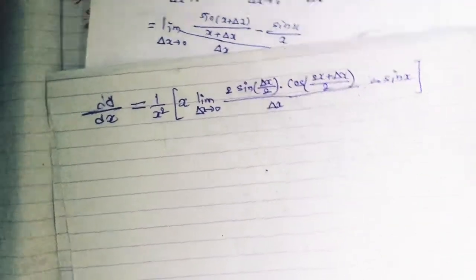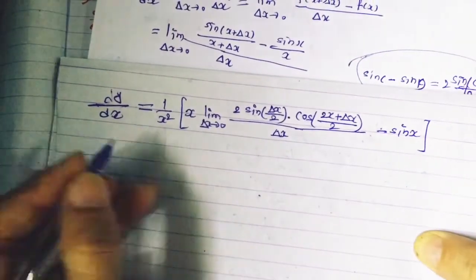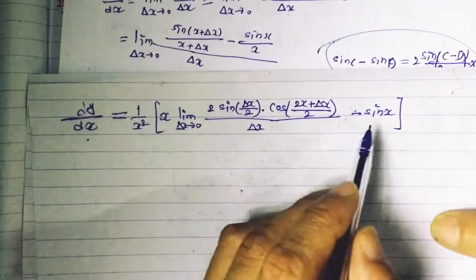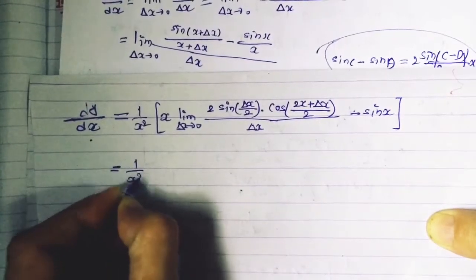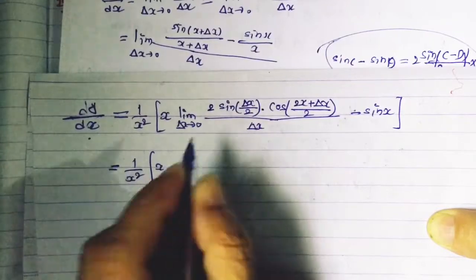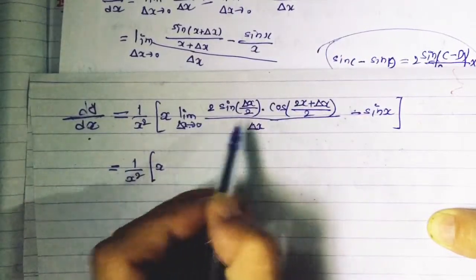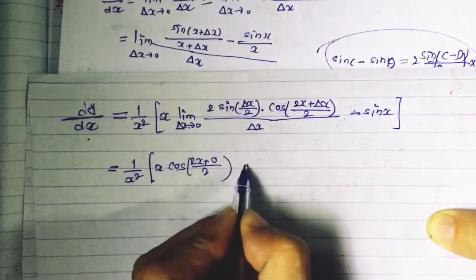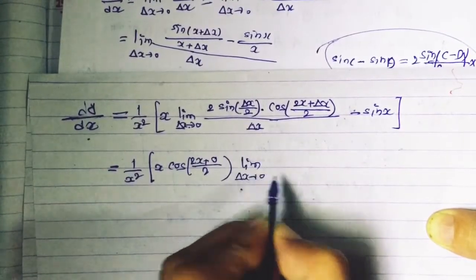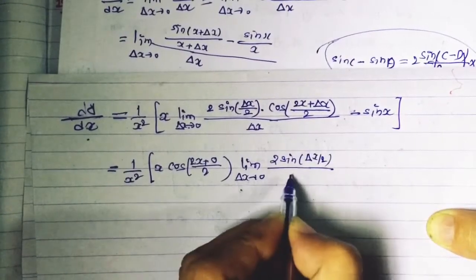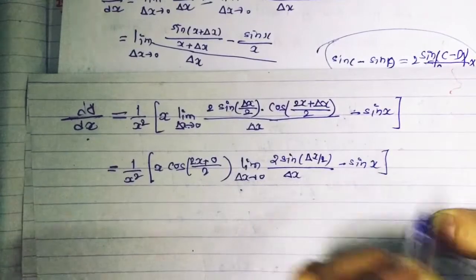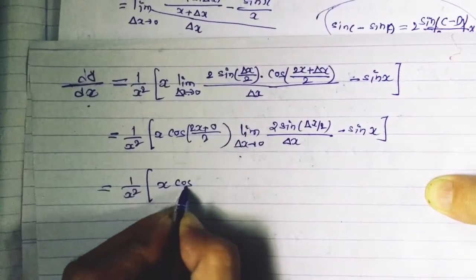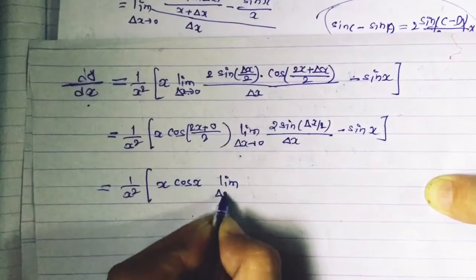So dy/dx = (1/x²) times: x · lim(δx→0) 2·sin(δx/2)·cos[(2x + δx)/2] / δx − sin(x). Taking the cos term outside the limit and substituting δx = 0 inside it gives cos(2x/2) = cos(x).